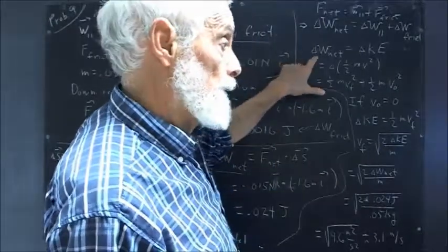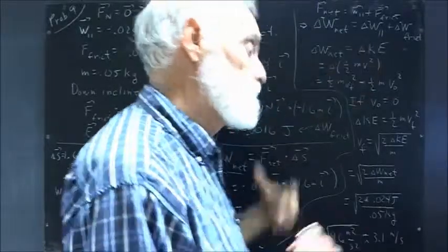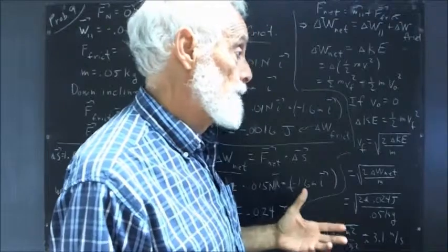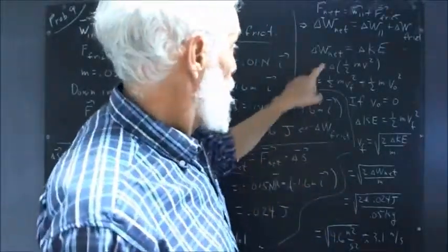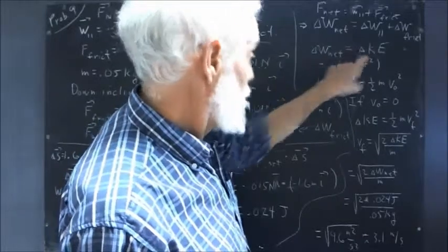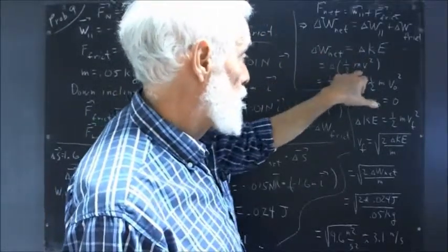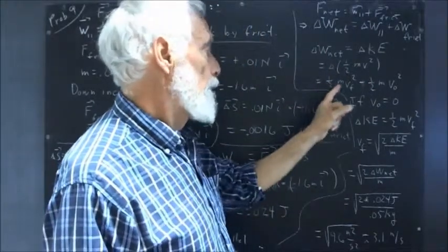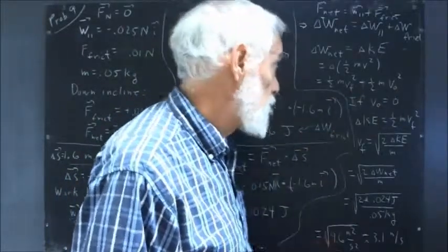So we also know that the work done by the net force is equal to the change in kinetic energy. And you should be able to derive that, at least from the equations of uniformly accelerated motion and Newton's second law. Okay, and that being true, then we know that the work done by the net force is equal to the change in the quantity one-half mv², which is equal to one-half m times the final velocity squared minus one-half m times the initial velocity squared.